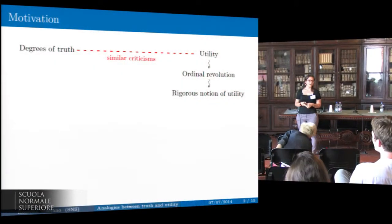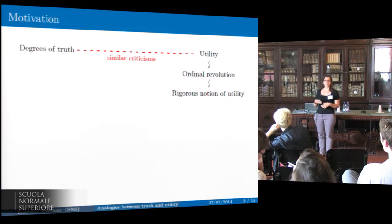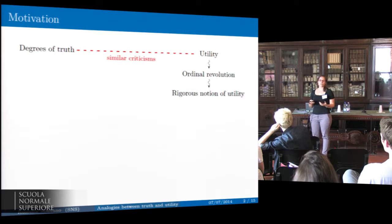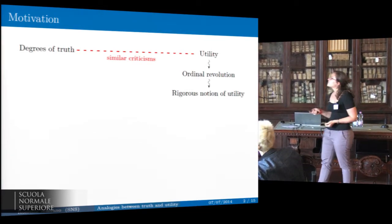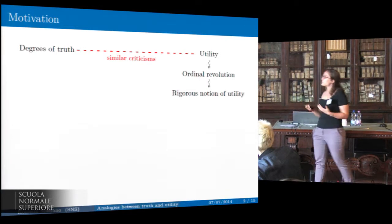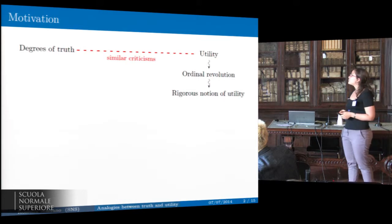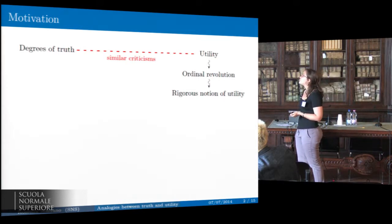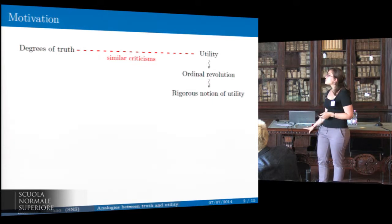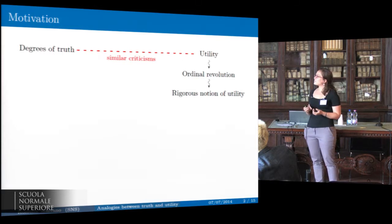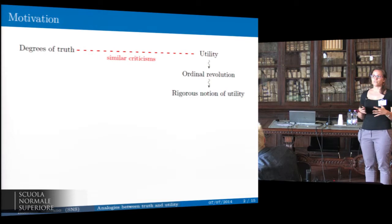What motivates this inquiry? The simple observation that the notion of degrees of truth has been the object of some criticisms. Those criticisms are very similar to the ones which have been raised against the notion of utility. In the case of utility, those very criticisms motivated what is usually called the ordinal revolution, which led to a rigorous notion of utility.